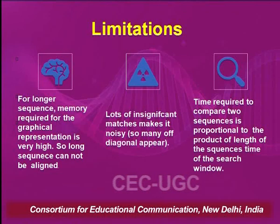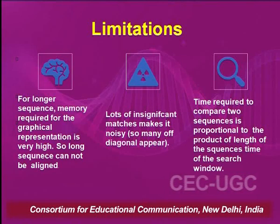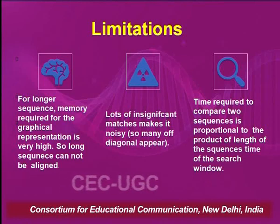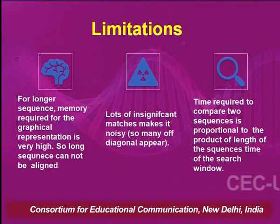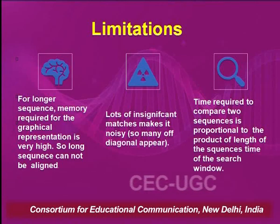So with such a simple dot plot we can get a lot of information about the sequences. However, dot plots have limitations: for longer sequences, the memory required for graphical representation is very high, so we cannot use dot plots for long sequences. There are also many insignificant matches that make it noisy, creating additional diagonals which cause confusion. The time required for comparing two sequences is proportional to sequence length. Dot plots are important and basic, but limited when comparing large numbers of sequences.